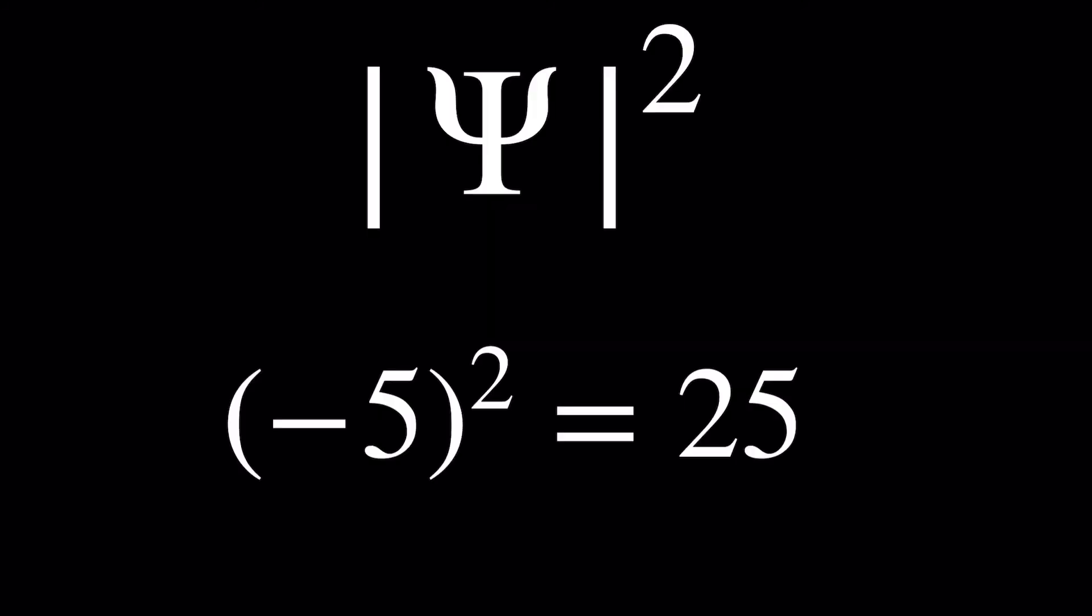Nonetheless, I would like to quickly address a question some of you might be having. Why do you need to take the magnitude of the wave function before squaring it? I mean, doesn't squaring always make the number positive anyways?